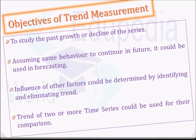The objectives of studying or measuring the trend are: first, to study the past growth or decline of the series, which helps in business decision-making by assuming the same behavior will continue in future, and thus can be used in forecasting. Second, the influence of other factors can be determined by identifying and eliminating the trend — the residual factors will then show seasonal, cyclic, or irregular variations. Third, the trend of two or more time series can be compared to check which data is increasing more rapidly.